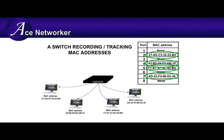Once it fills up its MAC address table, it knows exactly which devices are directly connected to it and exactly which port those devices are on. So when a data frame comes in with a destination MAC address, it knows exactly where to send it out, and it no longer has to send it out every other port on the switch other than the one it originally came in on. Once it learns all of these, it is a fully functional switch.